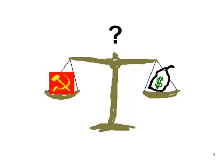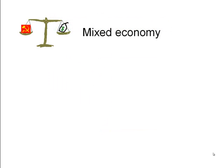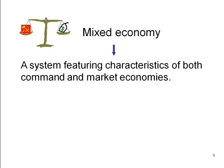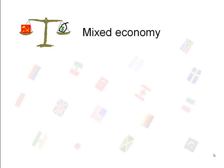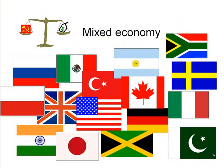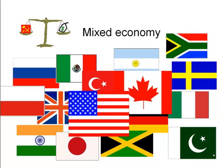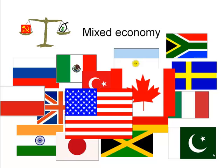Is there a way to blend the best parts of each of these systems? This is called a mixed economy — an economic system that features characteristics of both command and market economies. Most of the economies in the world are in fact mixed economic systems, with elements of both. This even includes the United States and Canada, two economies that we tend to view as being very capitalistic.